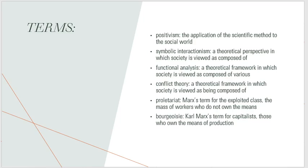When we study human behavior and gather enough data, we can actually explain a phenomenon. There are three sociological paradigms that sociologists always refer to: symbolic interaction theory, functional theory, and conflict theory. Symbolic interaction theory analyzes data at the micro level, while functional and conflict theories analyze data using a macro approach.